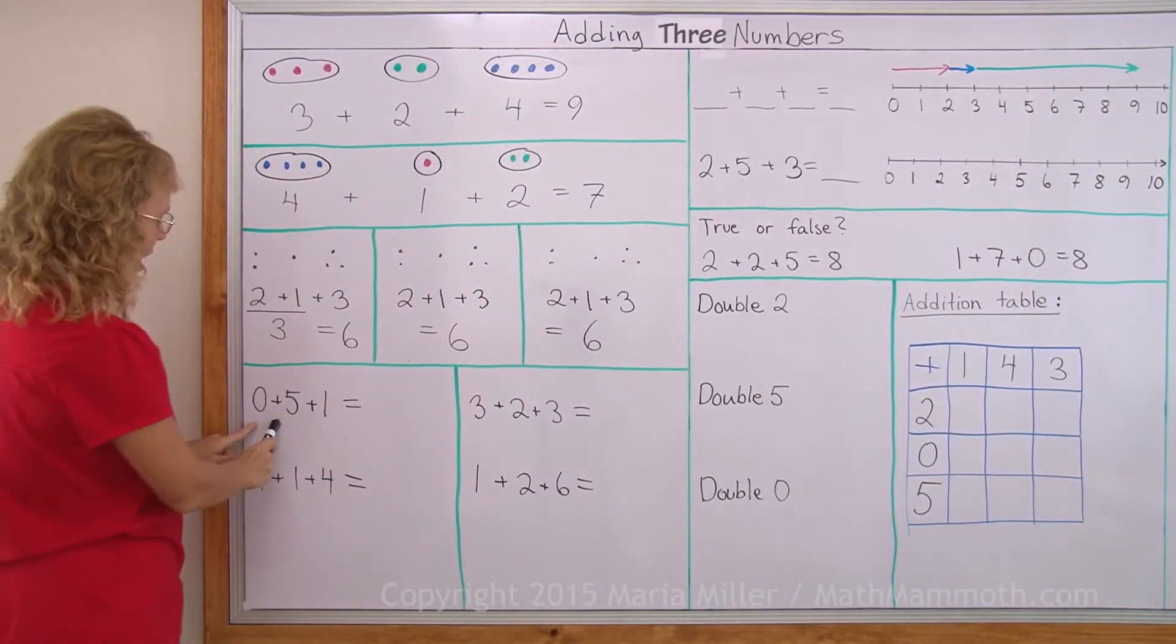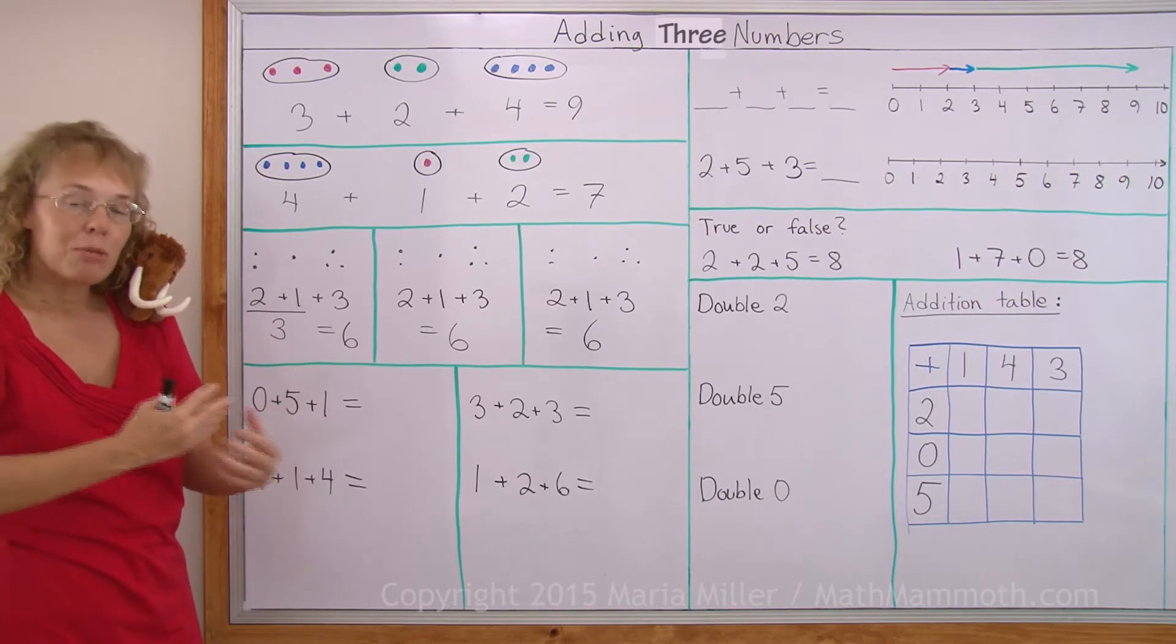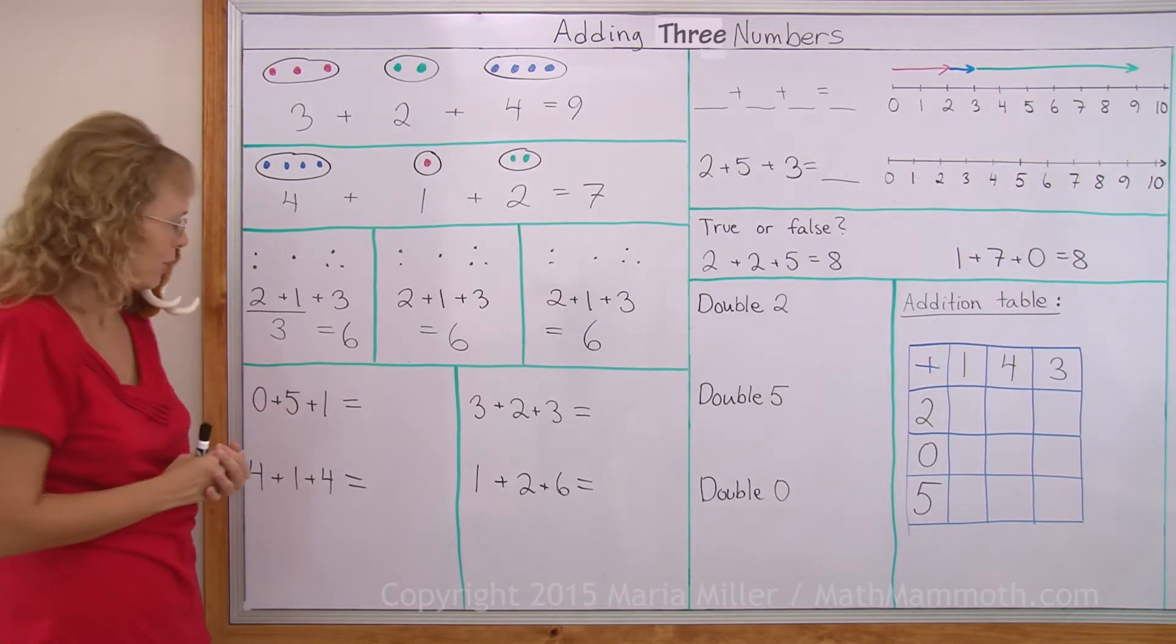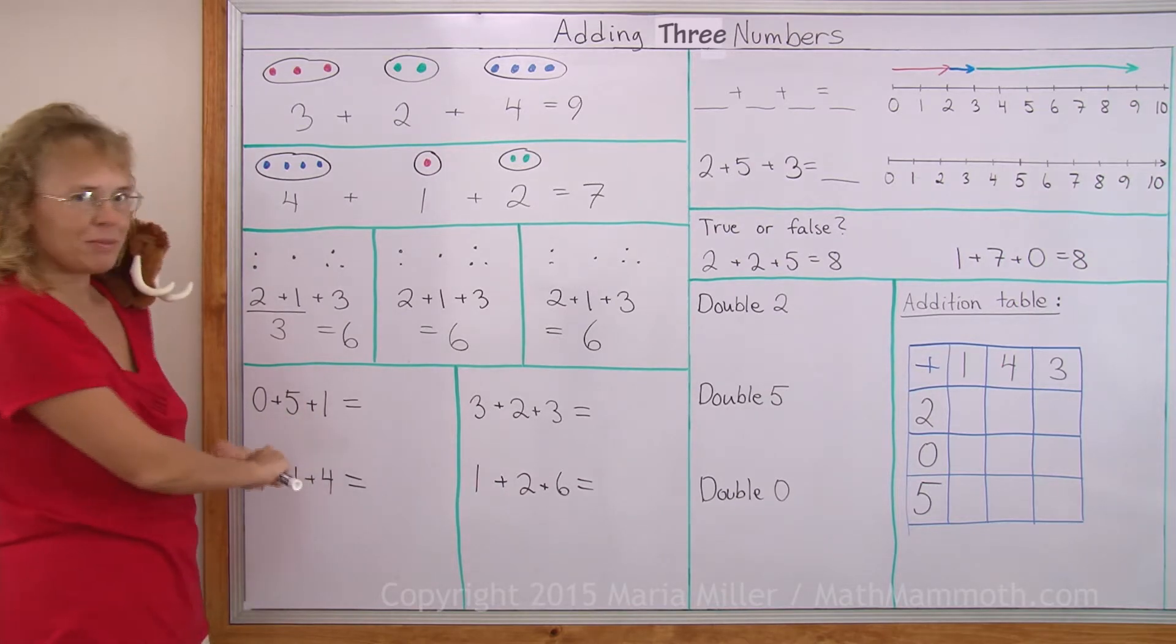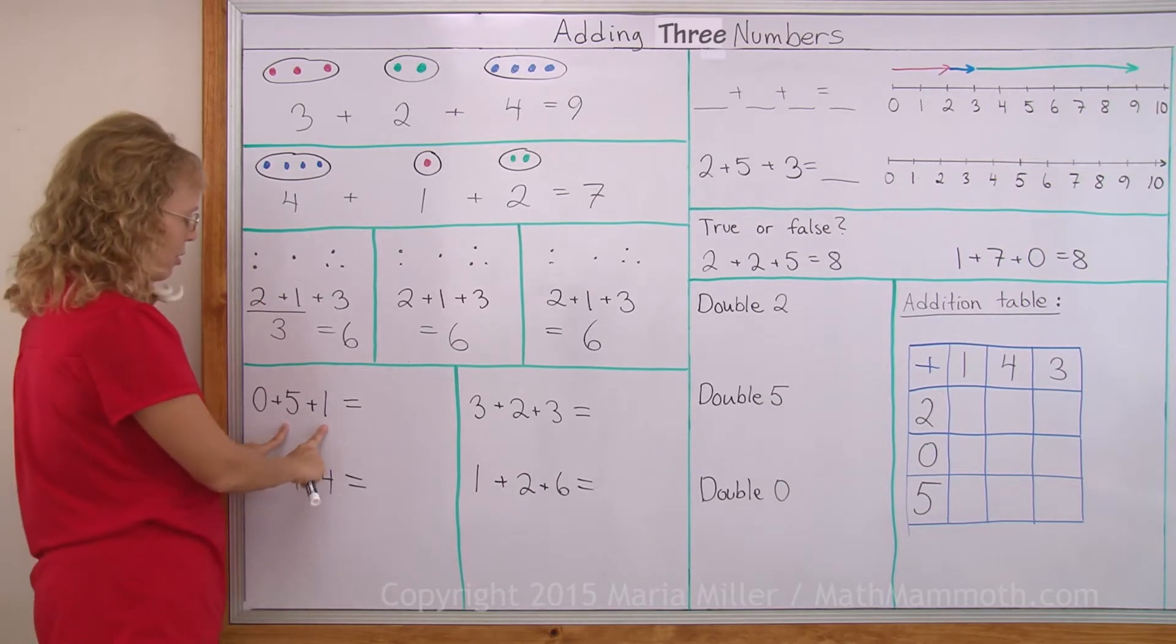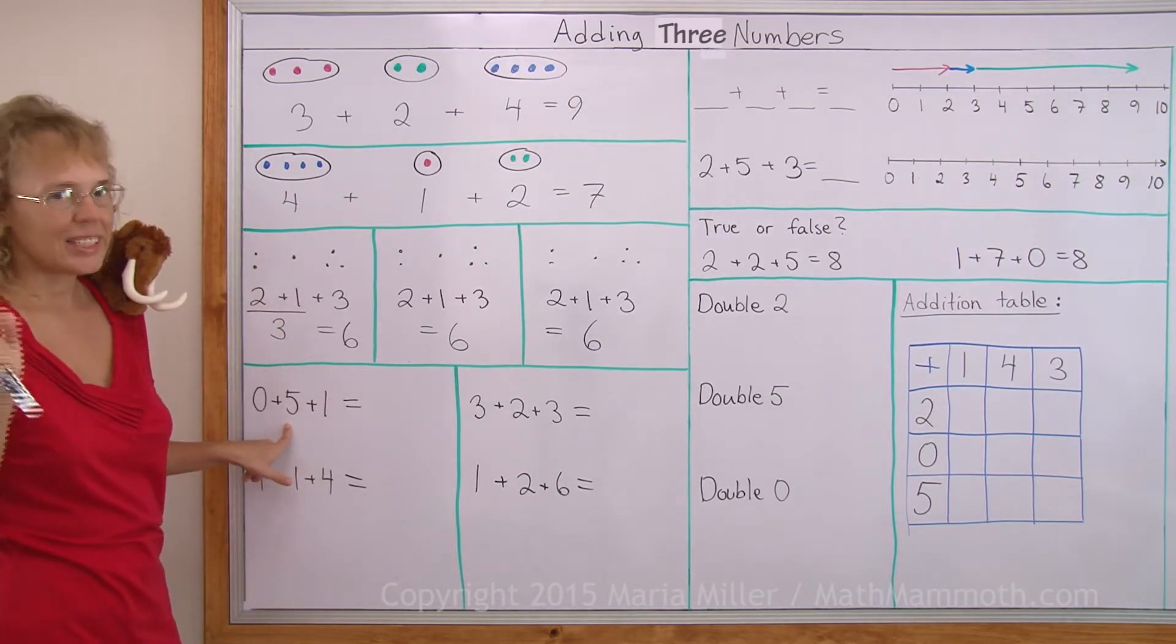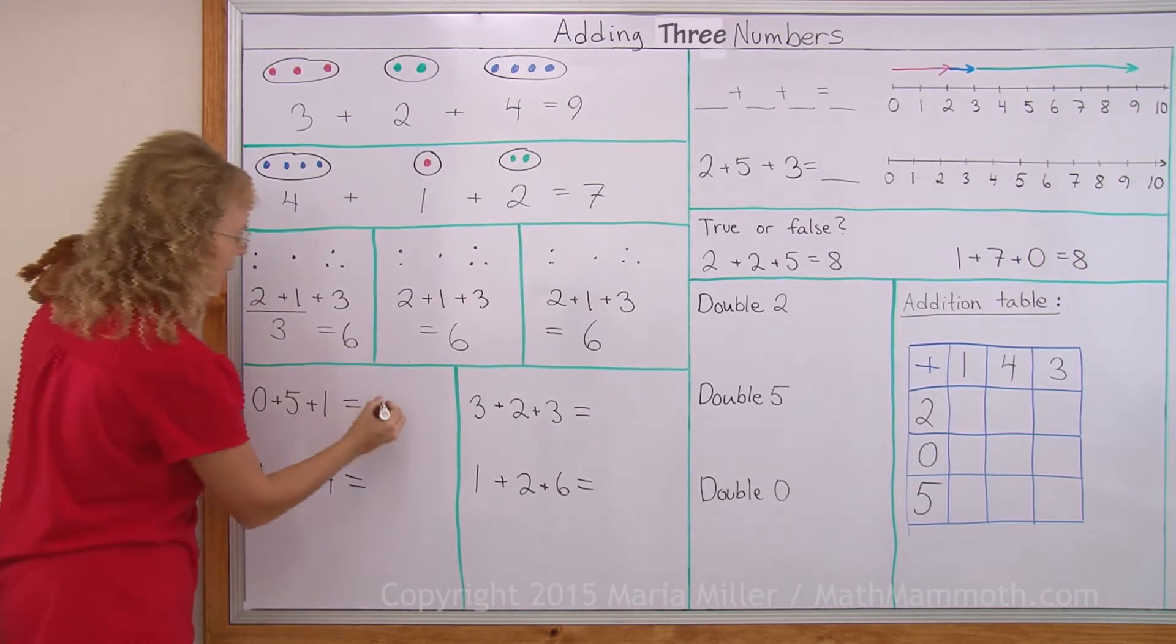Let's practice a little bit. And with all of these problems, you can decide in which order you add the numbers. You can, for example, decide that you want to add this and this first, one and zero, or one and five. I'm going to add five and one first. Five and one, that makes six. And then six and zero does not change anything. It's still going to be six.